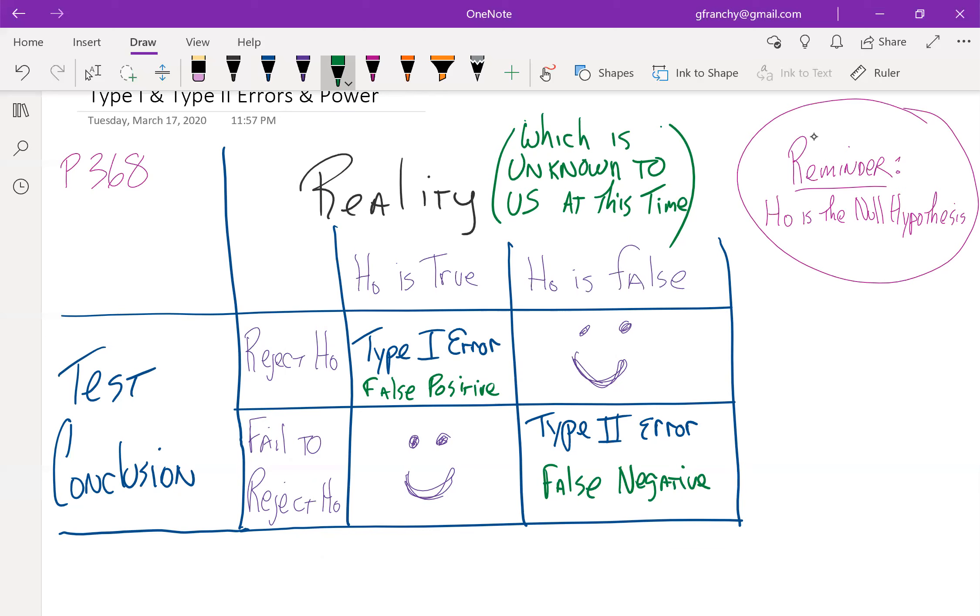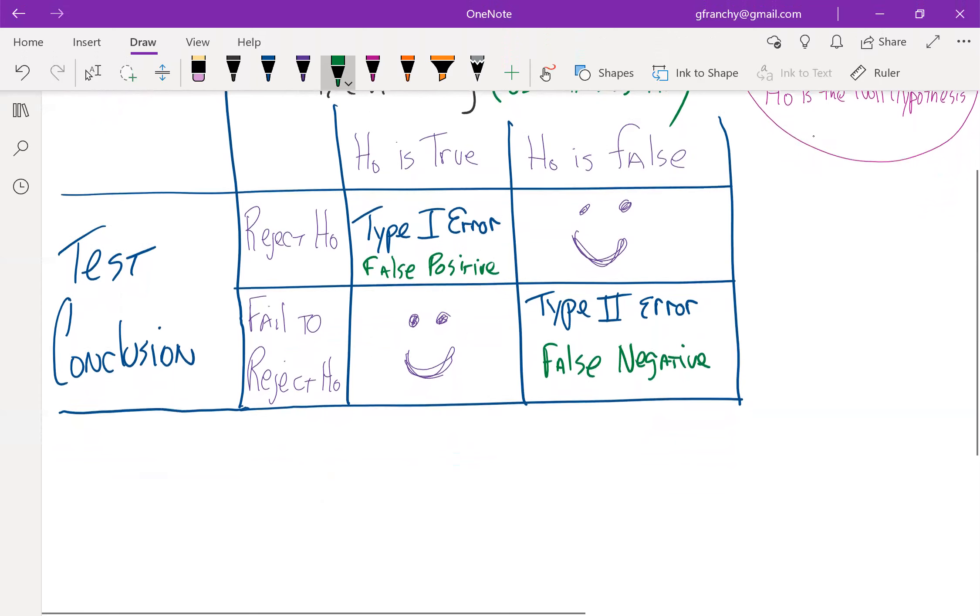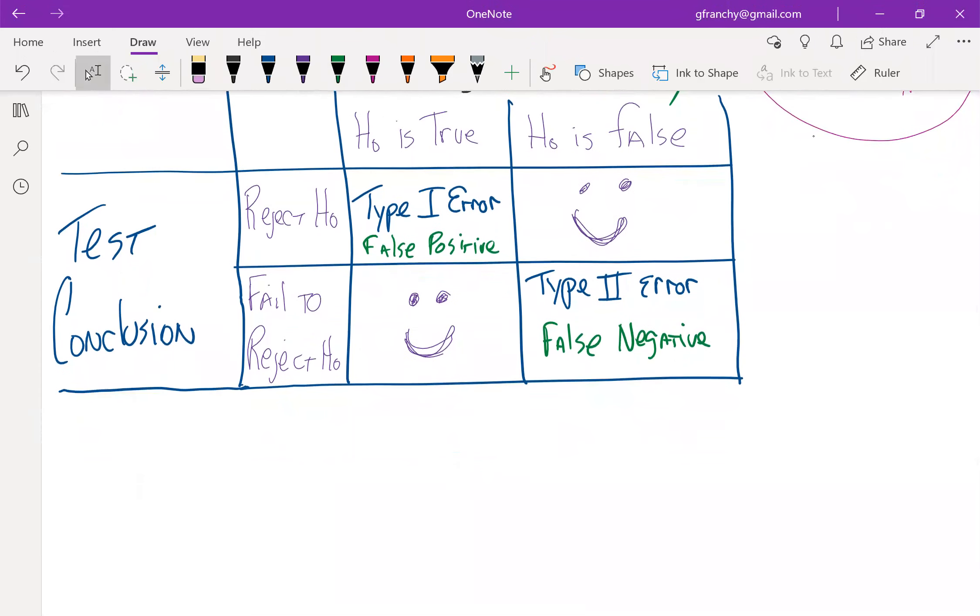So both of these things can happen to us. Those are things that we have to be aware of in our planning here. And it turns out, when we choose our significance level,